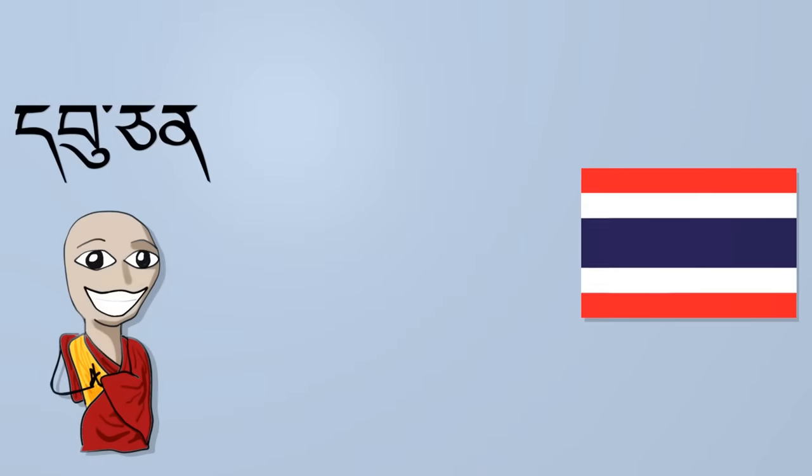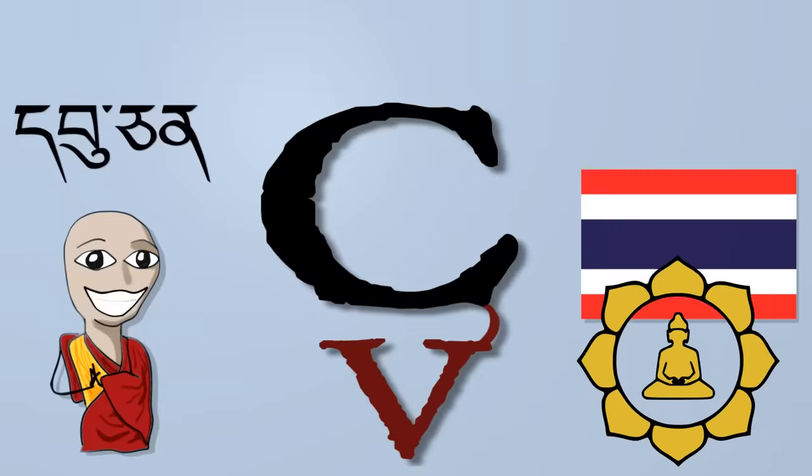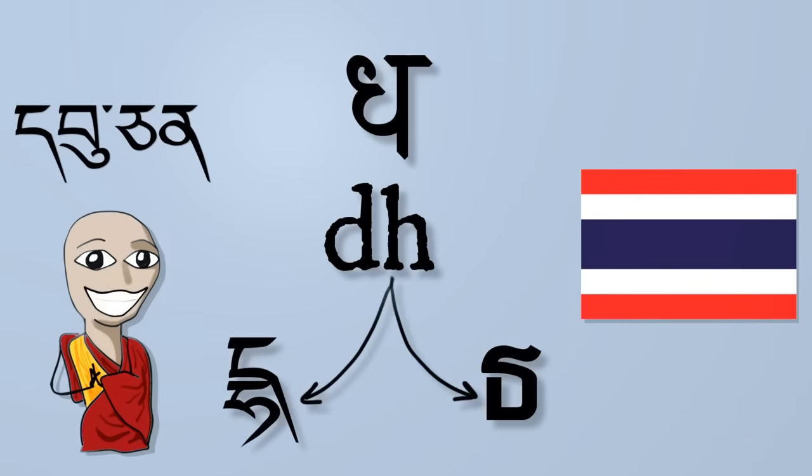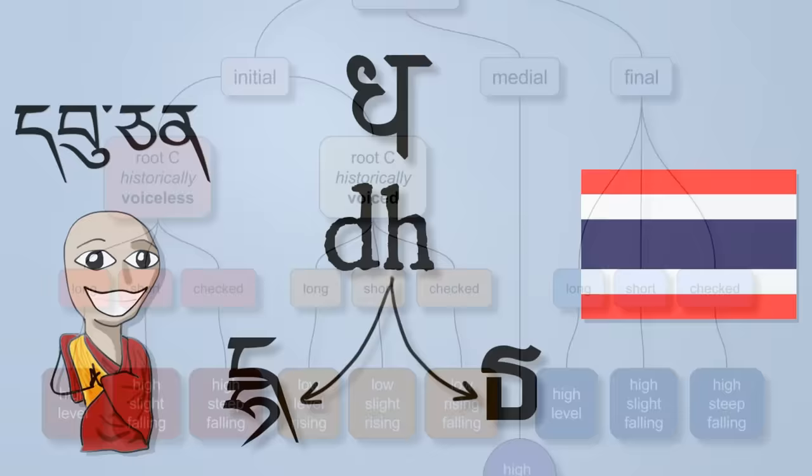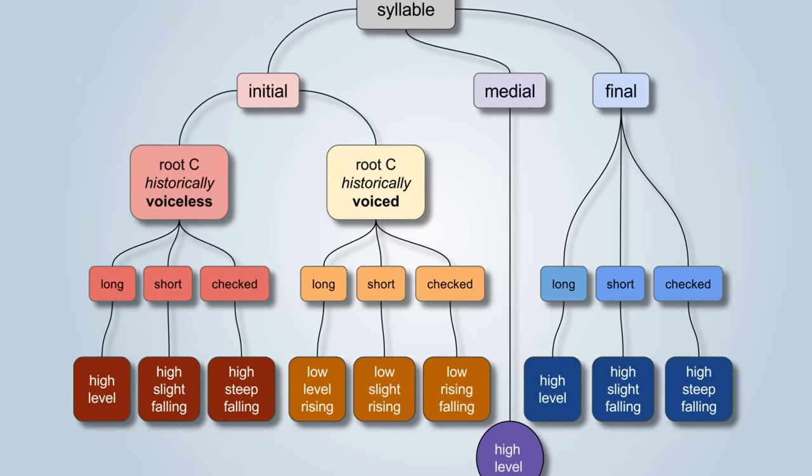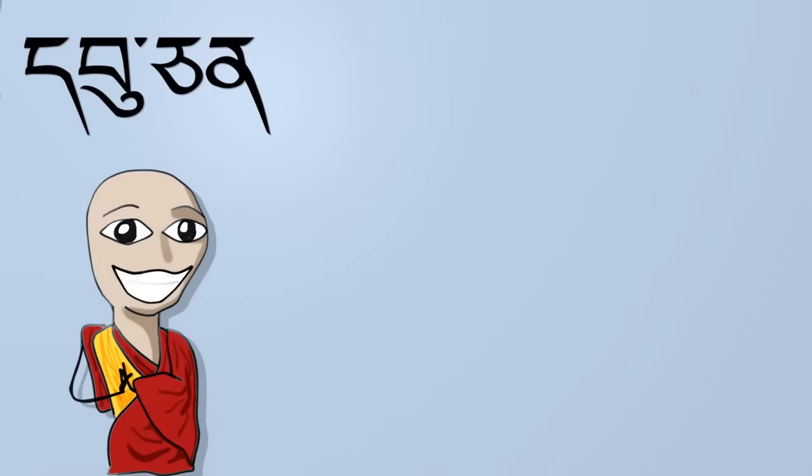They both emphasize consonants and surround them with vowels. They both came with Buddhism, so both have special conventions for transcribing sacred Sanskrit terms. And nowadays, they both have to deal with tones in convoluted ways they weren't designed to handle. But written Tibetan is much, much older.